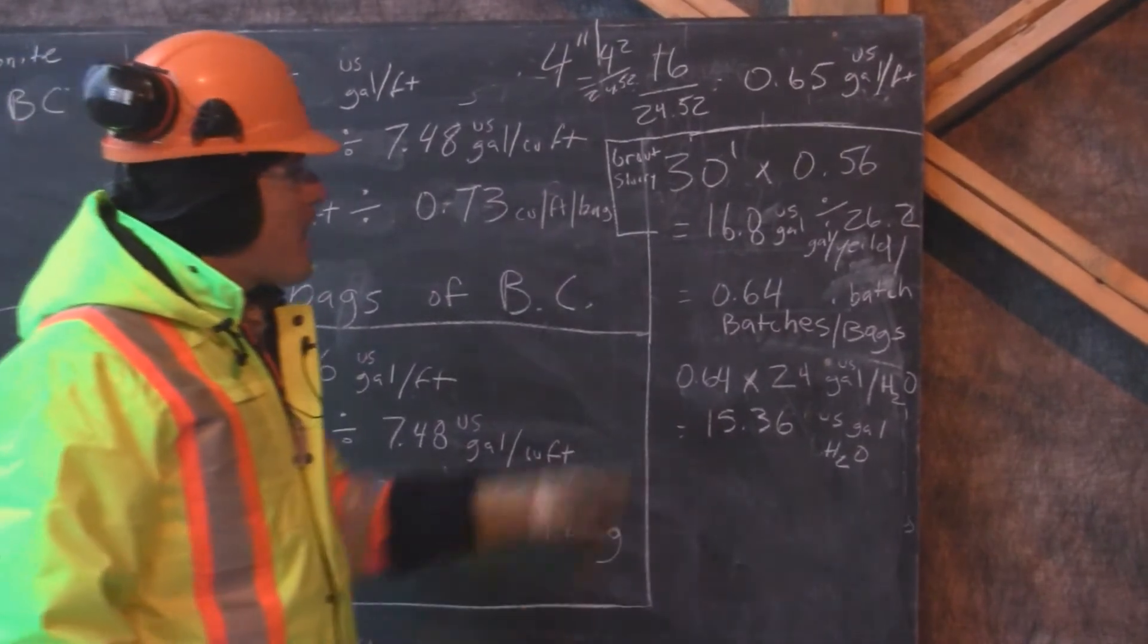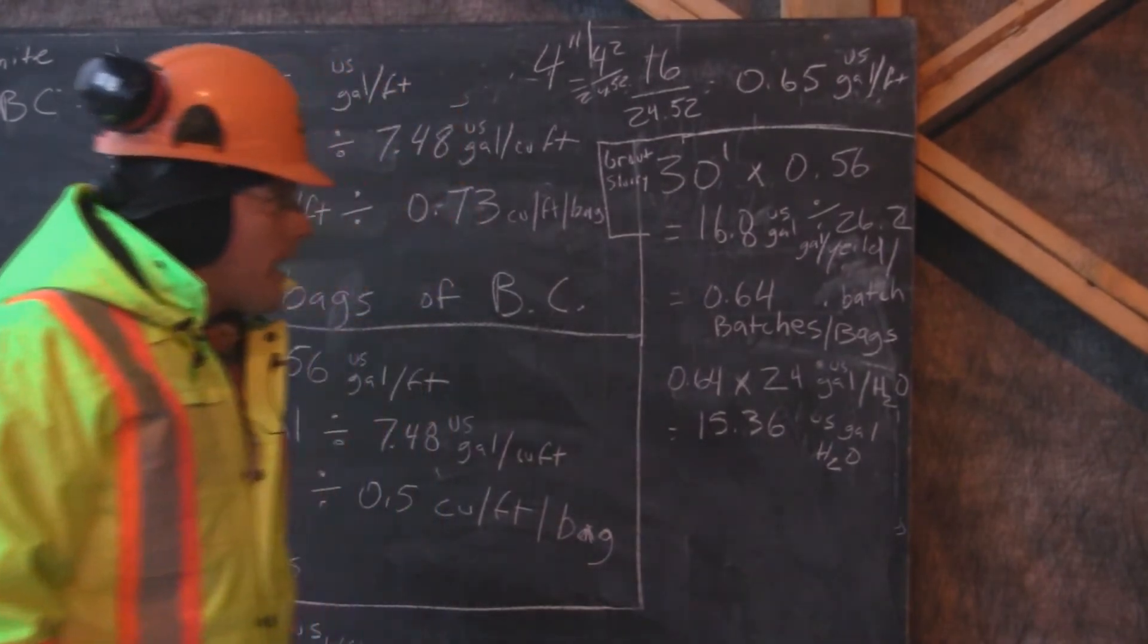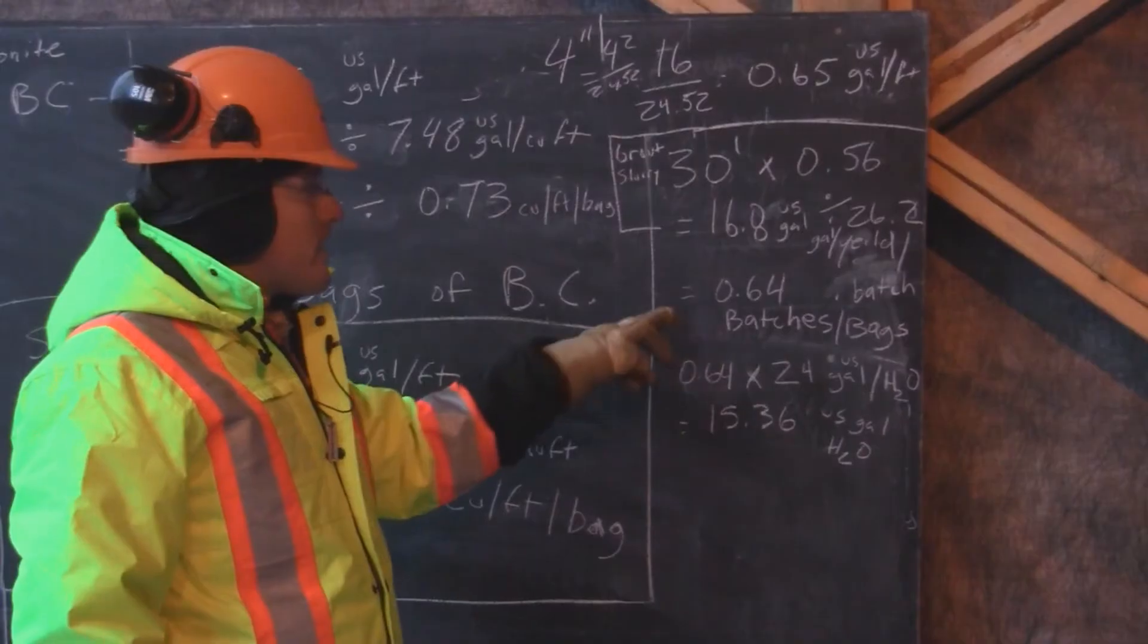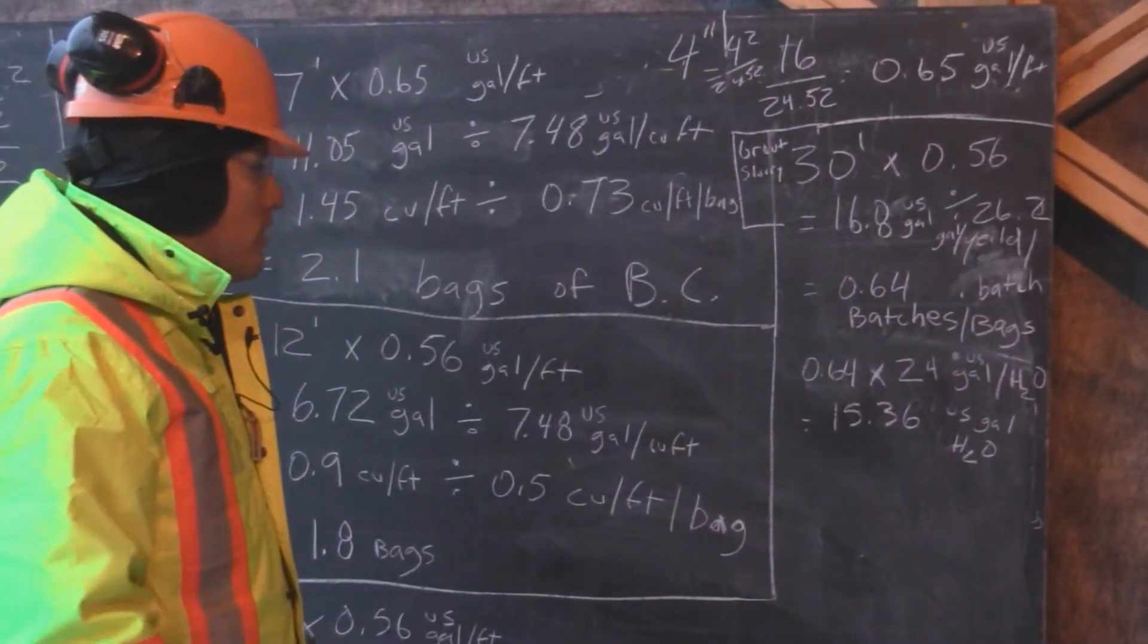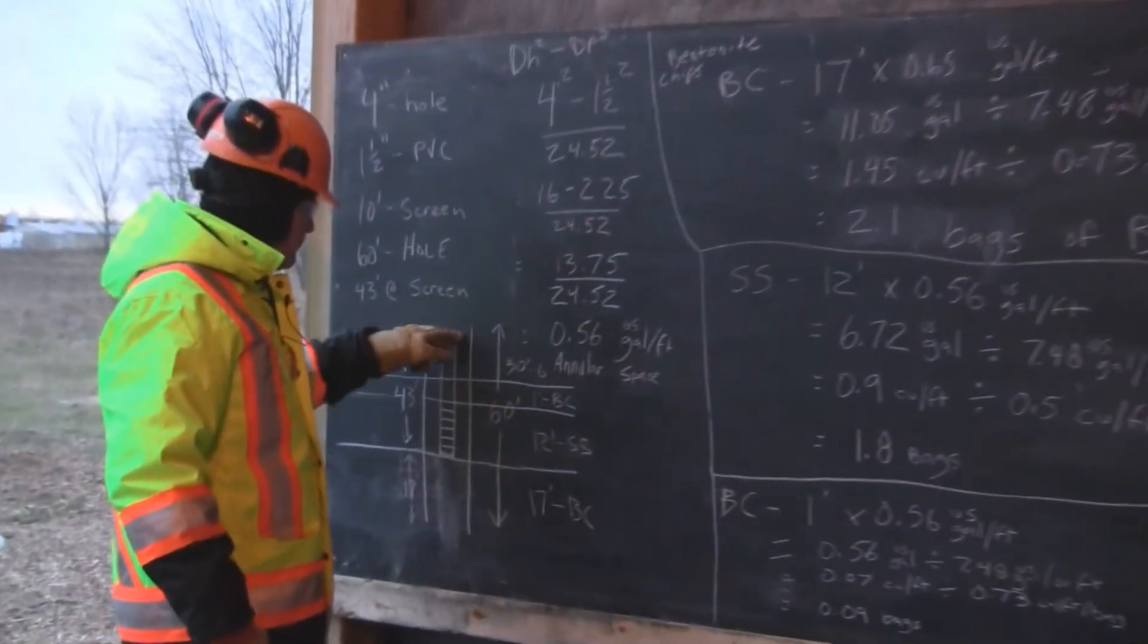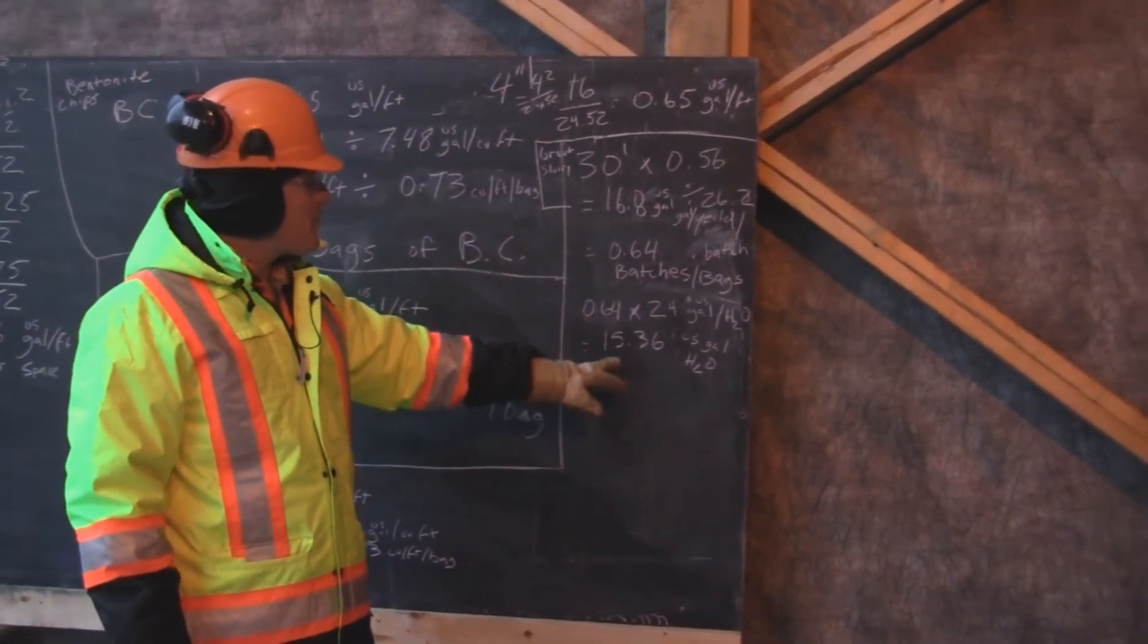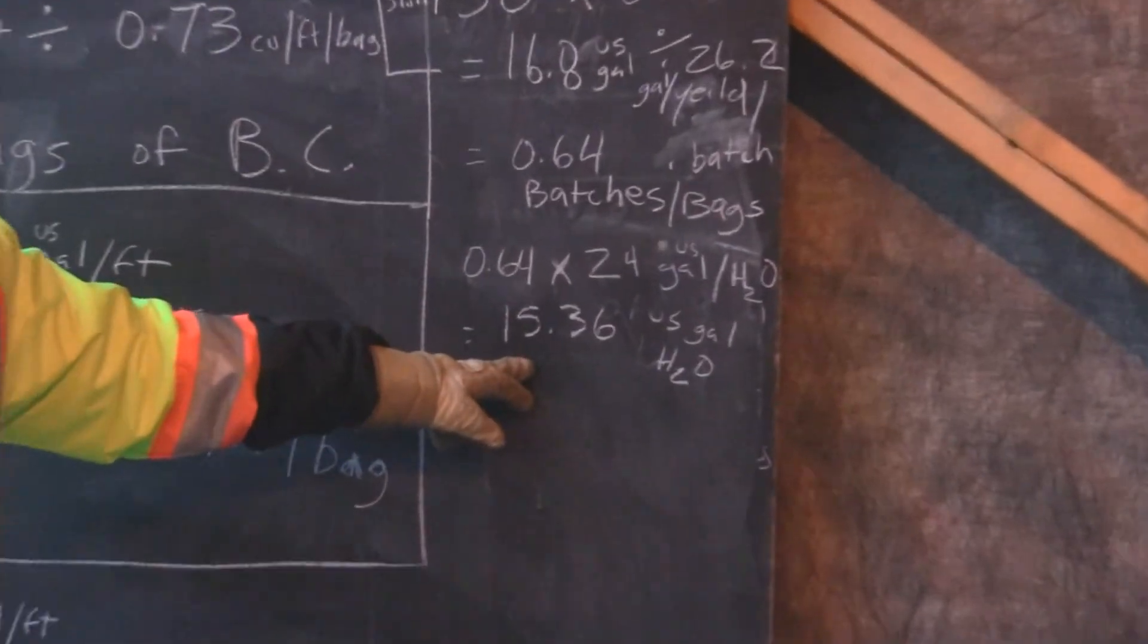We then divide 16.8 US gallons by 26.2, which is gallons yield per batch of grout slurry. That results in 0.64 batches or bags of grouted slurry used to fill the 30 foot of annular space. 0.64 batches times 24 gallons of water gives us 15.36 gallons of water for our grout slurry.